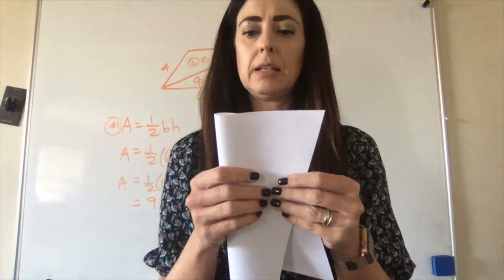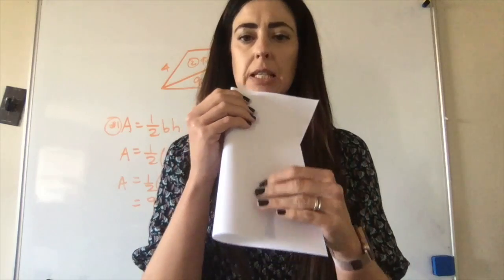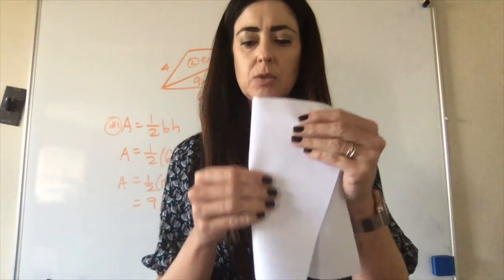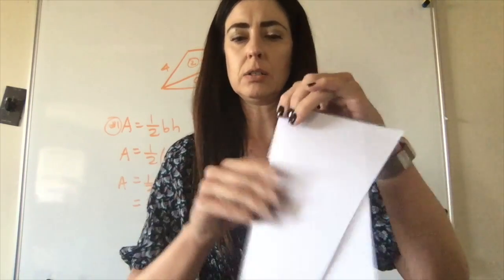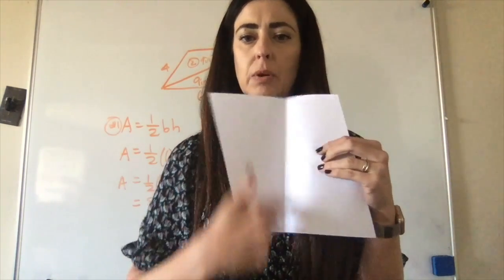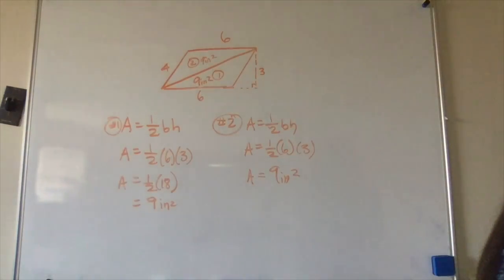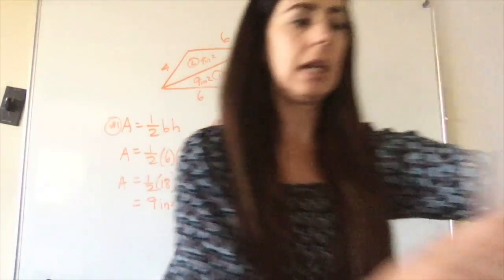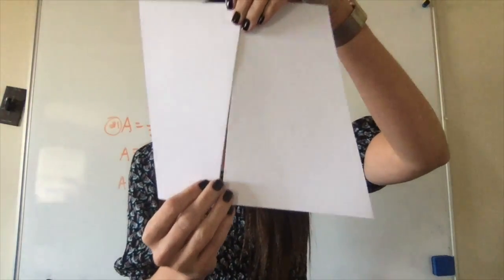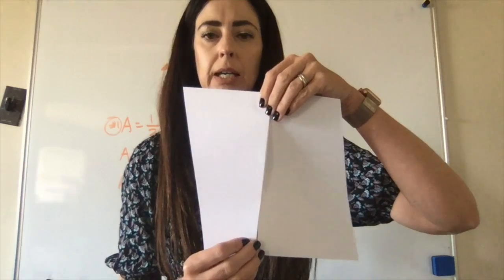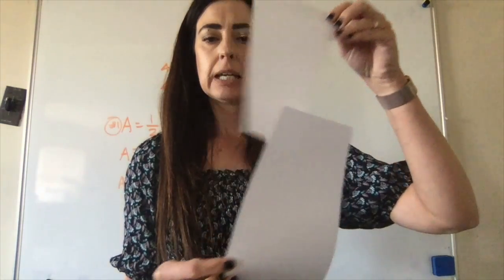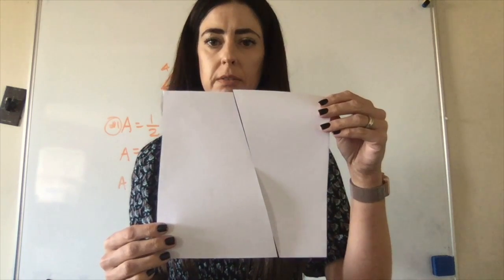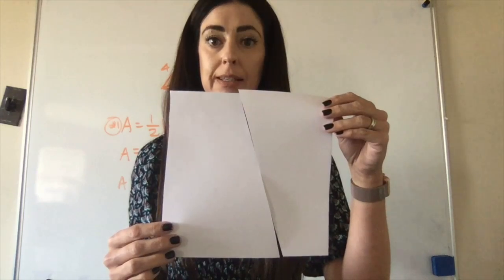Then we would have folded it so that the top and bottom match up, which means we're folding it at a 90-degree angle. And then we would have cut it, and what you would have seen is that for a parallelogram, when we cut it and rearrange it, does it make the shape of a polygon, of a quadrilateral? Yeah.